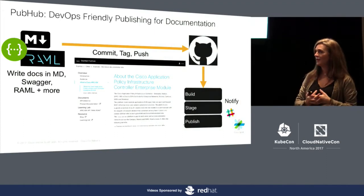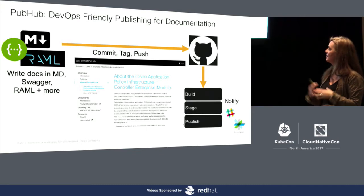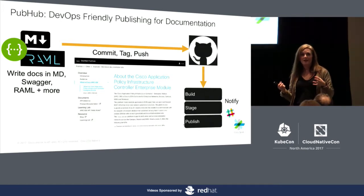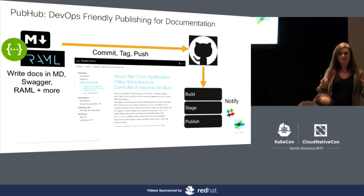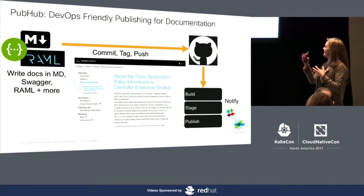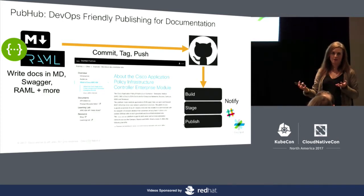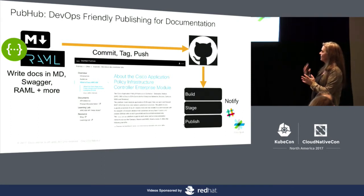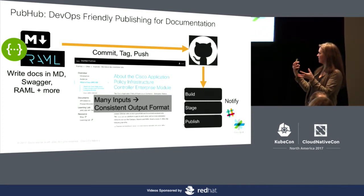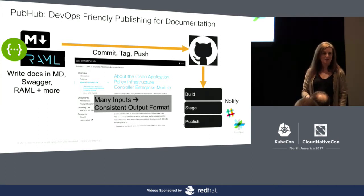So this is the project — we call it PubHub. It's an internal project right now. It has a front end where you can create projects and accept all these different types of documentation: Swagger, Markdown, RAML, some Cisco-specific ones. We use open source tools to process all those different types. It's all based through GitHub — we wanted it to be driven as you would code, treating documentation like code. You use a very standard commit, tag, push flow. You can build it, stage it, publish it. There are notifications through Slack and Spark. And all those different inputs come in but end up looking somewhat tied together — that was really our goal.